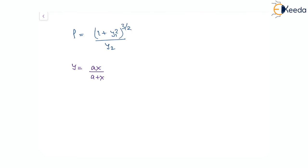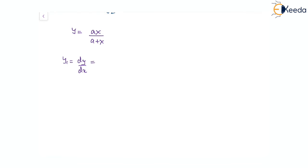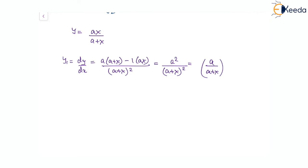From y = ax/(a + x), we find the first derivative y₁ = dy/dx by the quotient rule: a times (a + x) minus 1 times ax, all over (a + x)². This simplifies to a² / (a + x)², which equals (a/(a+x))². Since y/x = a/(a + x), we can write dy/dx = (y/x)².